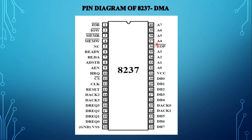Pin number 36 is EOP, end of process. It is an active low bidirectional pin used to indicate the completion of the DMA operation. The reception of EOP, either internal or external, will cause the 8237 to terminate the service. These are the pin details of the 8237 DMA controller.